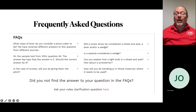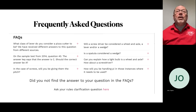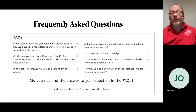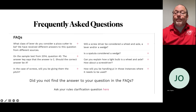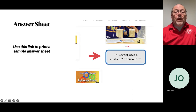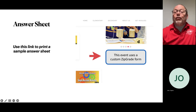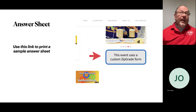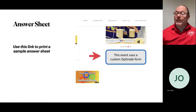If you have a question that isn't answered by one of those, use the link at the bottom of this section where it says 'ask your rule certification question here.' You click on that, put in your question, I will receive an email and I will answer that question and get back to you. Also on that page there is a link to the custom zip grade form that we'll be using for this event, so you can print those off and have the students practice with them.